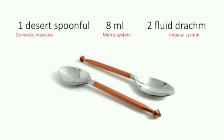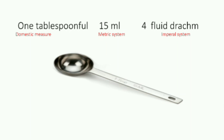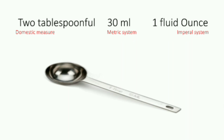One dessertspoonful is equal to 8 ml in the metric system and 2 fluid drachms in the imperial system. One tablespoonful is equal to 15 ml in the metric system and 4 fluid drachms in the imperial system. Two tablespoonsful is equal to 30 ml in the metric system and 1 fluid ounce in the imperial system.